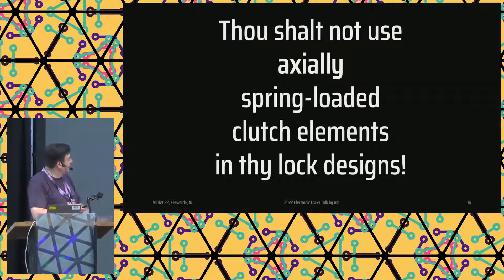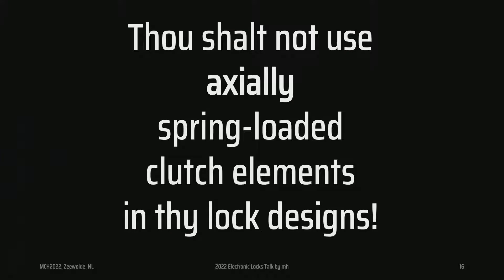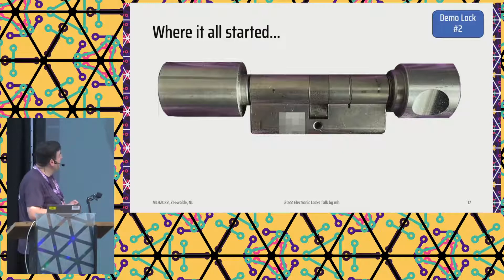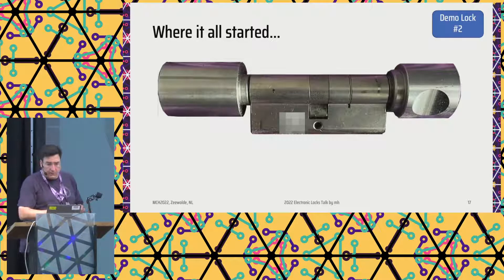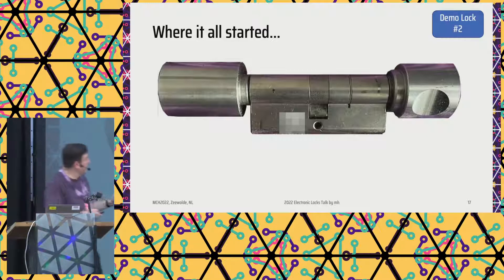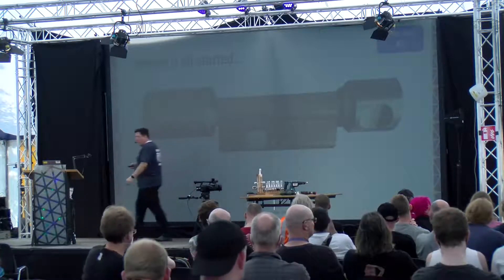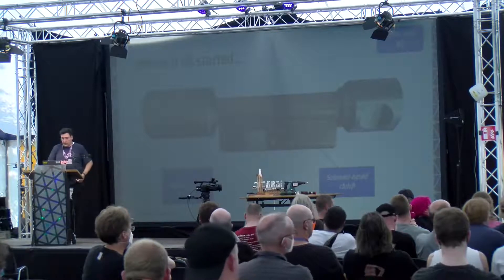There is one thing that I think should be part of the training of lock designers: you should not use spring-loaded clutch elements. I will demo other locks soon. This is where the whole thing started — this is a really old lock from a manufacturer, maybe 20 years ago. They have two more generations in the meantime that are not vulnerable to this, but I want to show it briefly. This actually does have a solenoid in here, so if you hit on it, it will move. So that's the first one — it has a solenoid-based clutch.